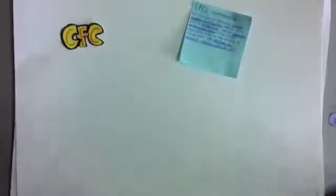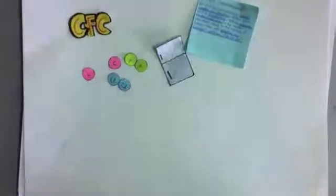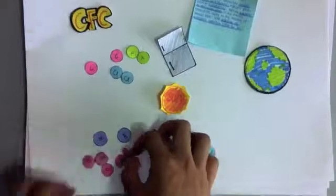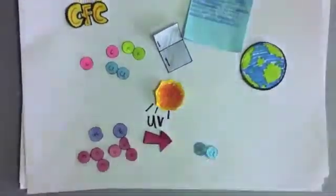What are CFCs? CFCs are chlorofluorocarbons that contain the elements carbon, chlorine and fluorine, typically found in refrigerants. They are harmful to the ozone layer and release chlorine atoms in UV radiation from the sun.